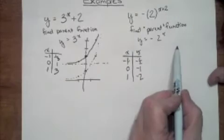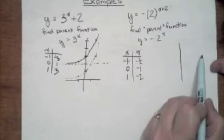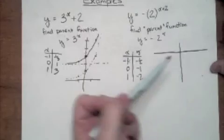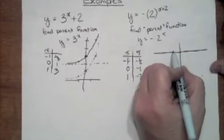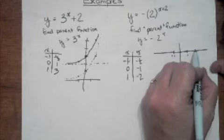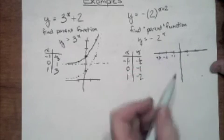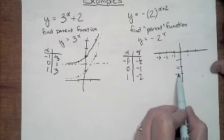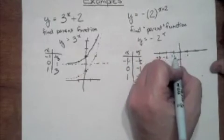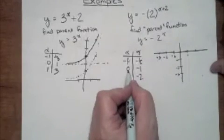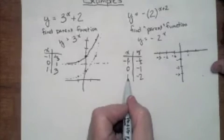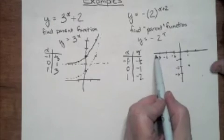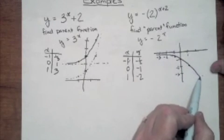Graphing this: it's always a good idea to wait until you have your numbers before you set up your graph, because I know all my numbers are negative. So my points are: negative one comma negative one-half, zero comma negative one, and one comma negative two. This is the reflection of a growth curve — it goes kind of like that on the negative side.